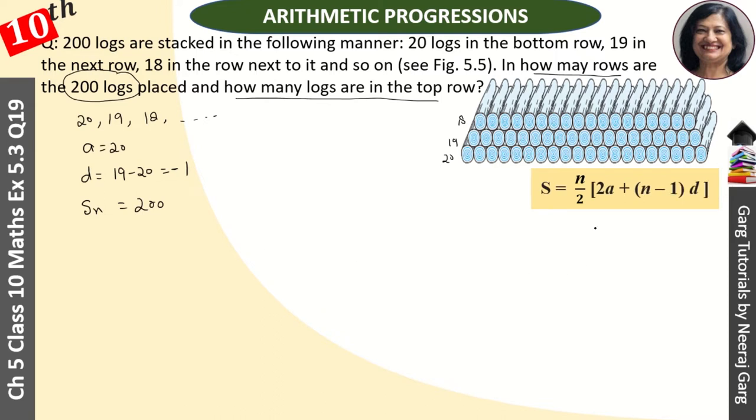SN is N by 2 times [2A plus N minus 1 times D]. Substituting: N by 2 times [2 times 20 plus N minus 1 times minus 1] equals 200. So this becomes N by 2 times [40 minus N plus 1].